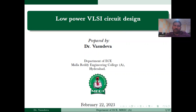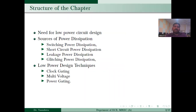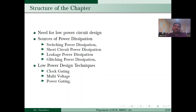I am going to be presenting on low-power VLSI circuit design. We will discuss about what is low-power circuit design, where we need to use it, and different types of sources of power dissipations. Power dissipation is in the form of three types: static power dissipation, dynamic power dissipation, and short circuit power dissipation. We will also discuss techniques to overcome power dissipations — clock gating, multivoltage, and power gating.